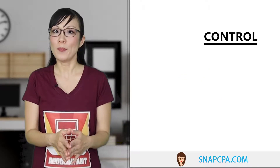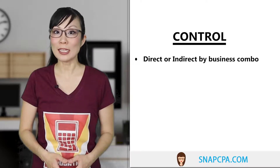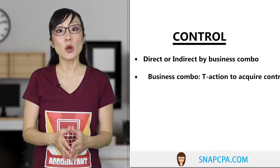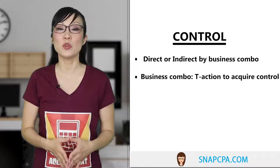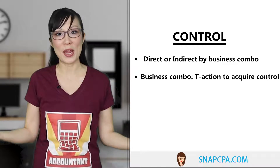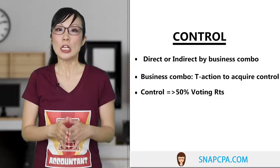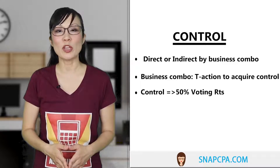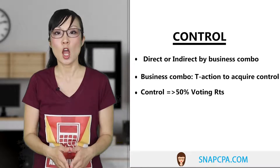How do we get this control? We can acquire control directly or indirectly through a business combination. A business combination is a transaction where an acquirer — who we'll call the parent — acquires control over another business. Generally, we get direct control when we own more than 50% of the voting rights of a company.